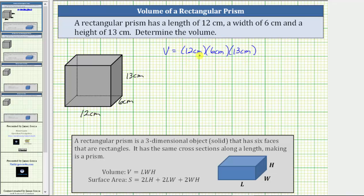But often we will see just the product without the units written as the volume V equals 12 times 6 times 13. And now to determine the volume, we multiply from left to right. 12 times 6 is equal to 72, giving us the volume V is equal to 72 times 13.